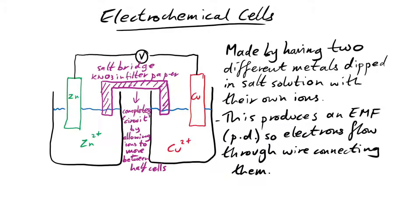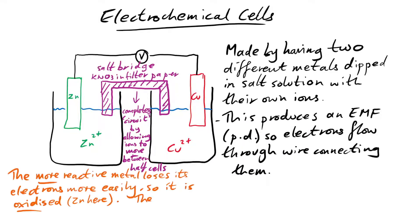Why does this work then? Well, it's because we have two different metals and the more reactive metal loses its electrons more easily than the other. So that's the one that's oxidized. In this case with zinc and copper, it's the zinc that's more reactive, it's going to be oxidized and the other metal is reduced.